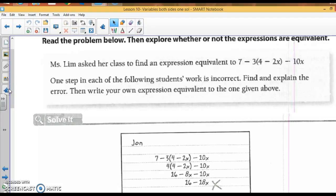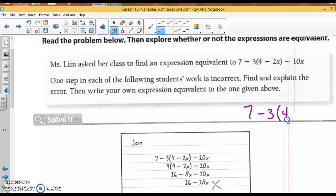This paper says Ms. Lynn asked her class to find an expression that is equivalent to this expression. One step in each of the following students' work is incorrect. Find and explain the error, and write your own expression according to what's given. I'm going to tell you, as a teacher, when you're checking somebody else's work, it is super important to do the work yourself first so you know what you should have. I would do this problem and make myself a key.